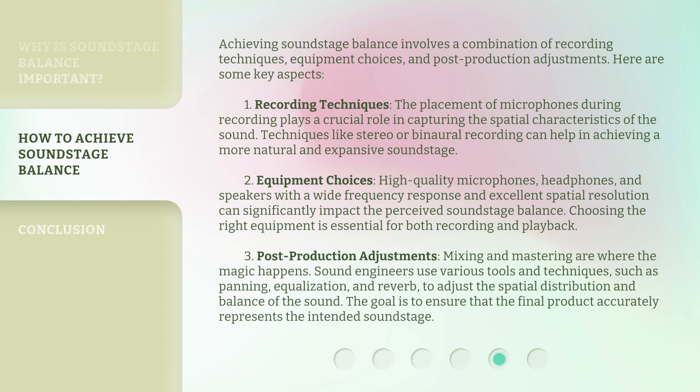Achieving soundstage balance involves a combination of recording techniques, equipment choices, and post-production adjustments. Here are some key aspects. 1. Recording techniques: the placement of microphones during recording plays a crucial role in capturing the spatial characteristics of the sound. Techniques like stereo or binaural recording can help in achieving a more natural and expansive soundstage. 2. Equipment choices: high-quality microphones, headphones, and speakers with a wide frequency response and excellent spatial resolution can significantly impact the perceived soundstage balance. Choosing the right equipment is essential for both recording and playback. 3. Post-production adjustments: mixing and mastering are where the magic happens. Sound engineers use various tools and techniques, such as panning, equalization, and reverb, to adjust the spatial distribution and balance of the sound. The goal is to ensure that the final product accurately represents the intended soundstage.